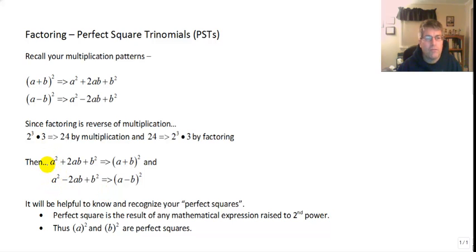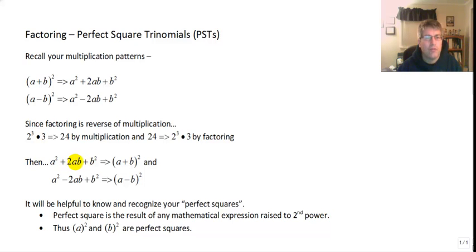Now this only works when a squared and b squared are perfect squares, and the linear term is twice the square root of a times b.